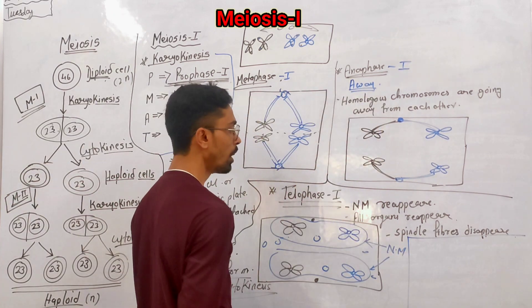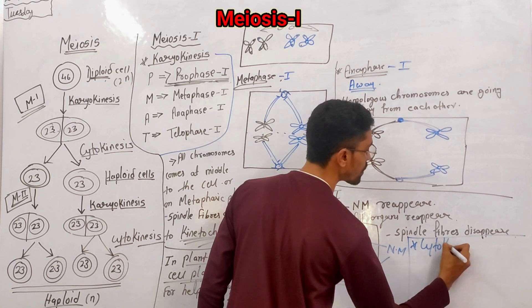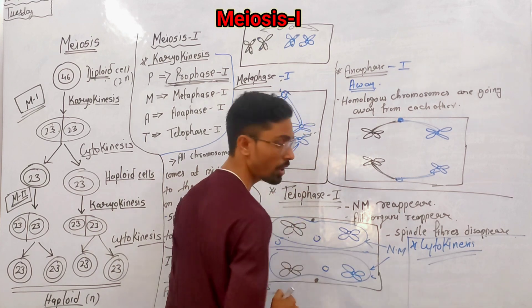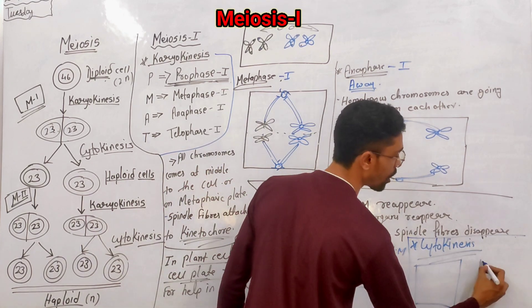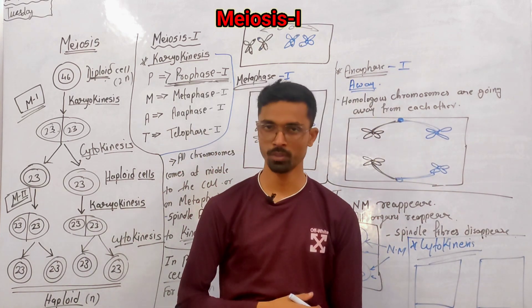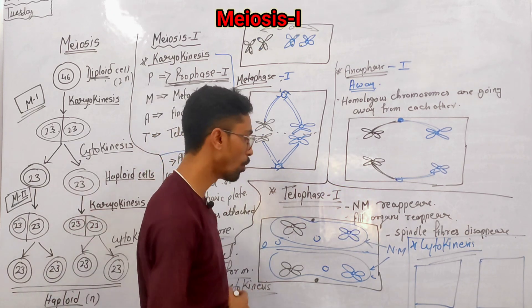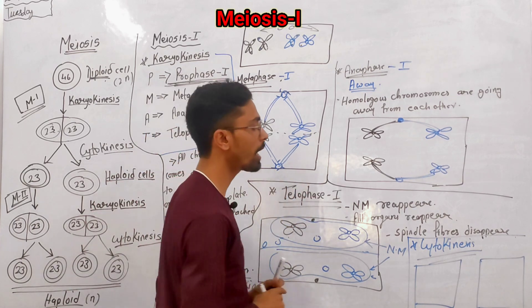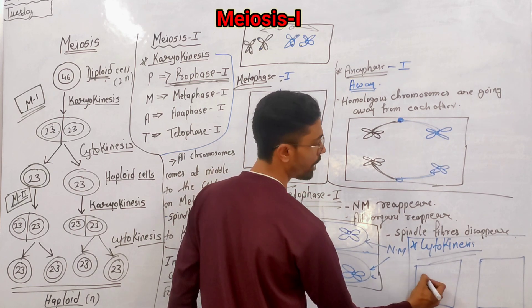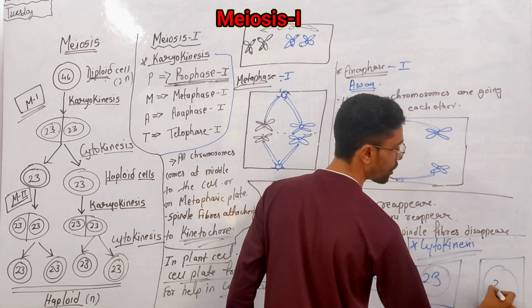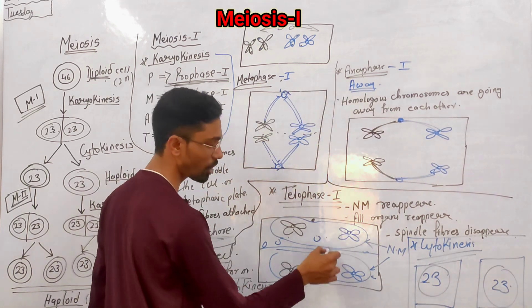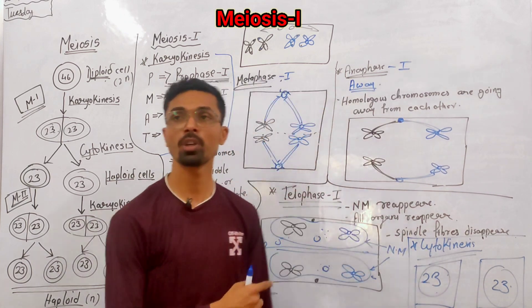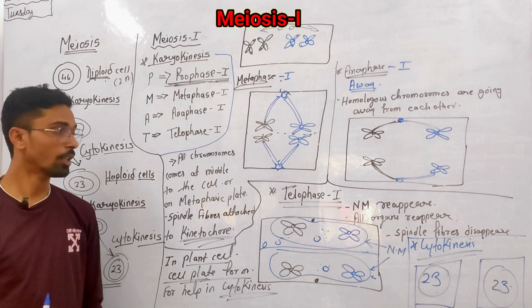The last step of meiosis 1 is cytokinesis. The cell divides — in animal cells using a cleavage furrow from the outside, and in plant cells using a cell plate. Each resulting cell has 23 chromosomes, because we started with 46 and now have 23 in each. These are haploid daughter cells.